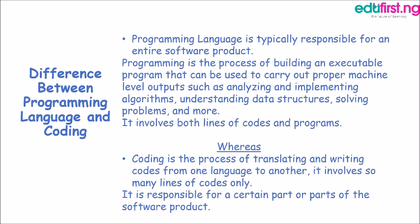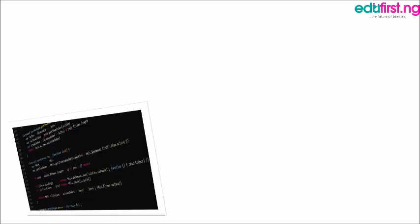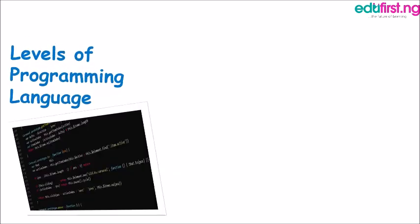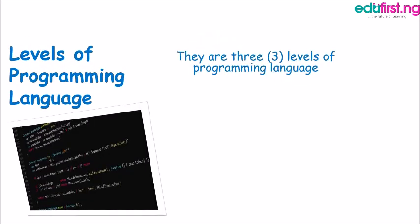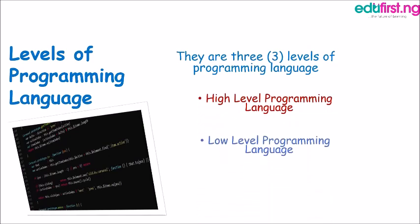We also have levels of programming languages. There are basically three types: the high-level programming language, the low-level programming language, and the machine-level programming language.